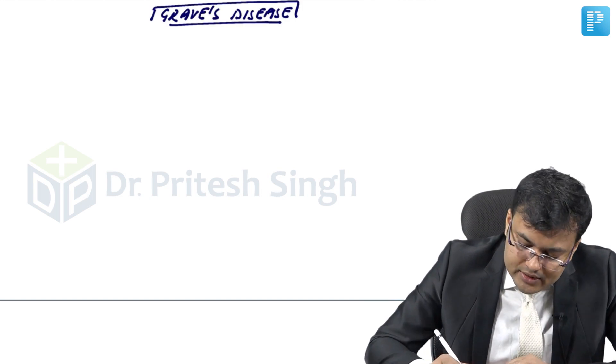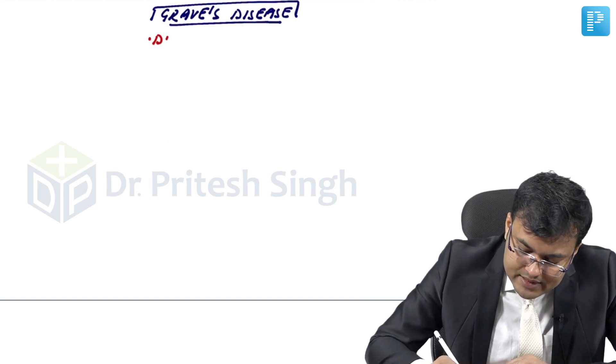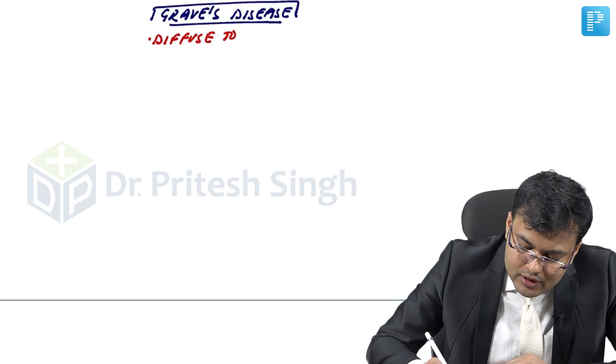Graves' disease — what is the other name of Graves' disease? It is also known as diffuse toxic goiter.